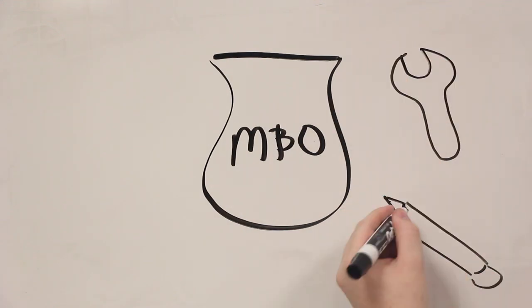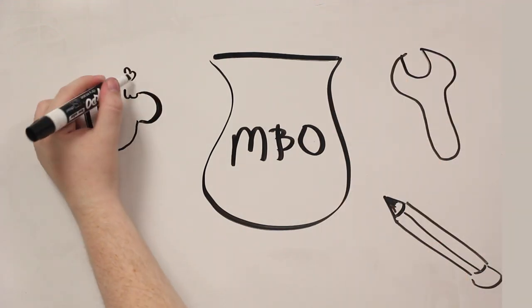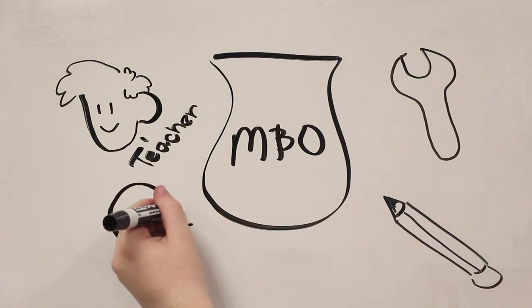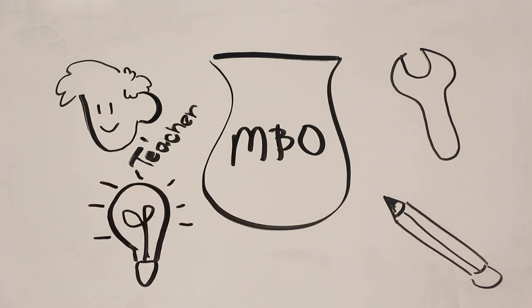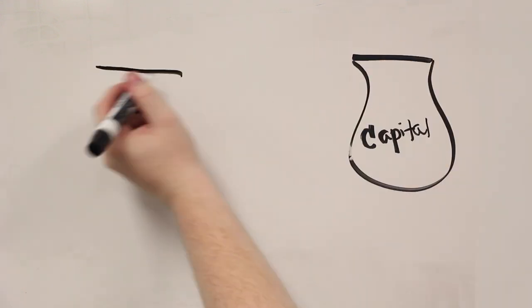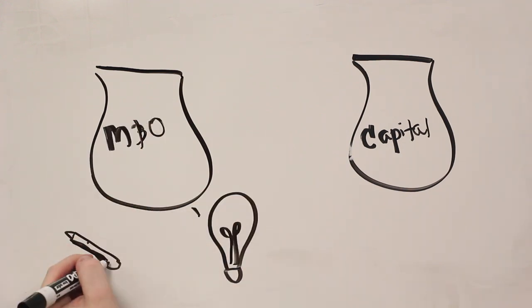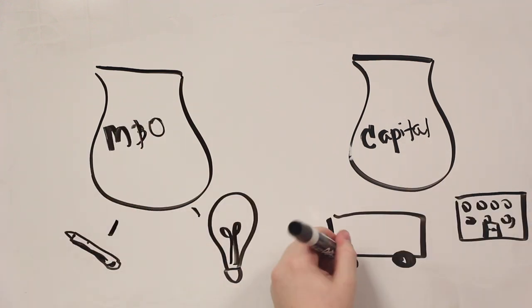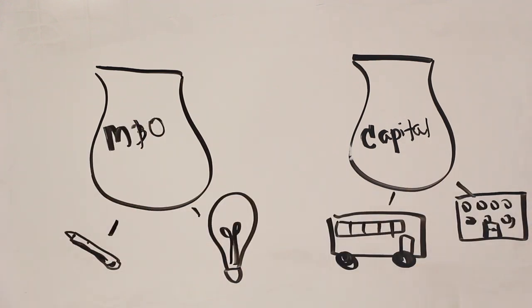MNO are your day-to-day expenses. This includes staff salary, utilities, transportation services, and general supplies. Now here's the thing. MNO money can only be used for these things and the same goes for capital money. They cannot interchange.